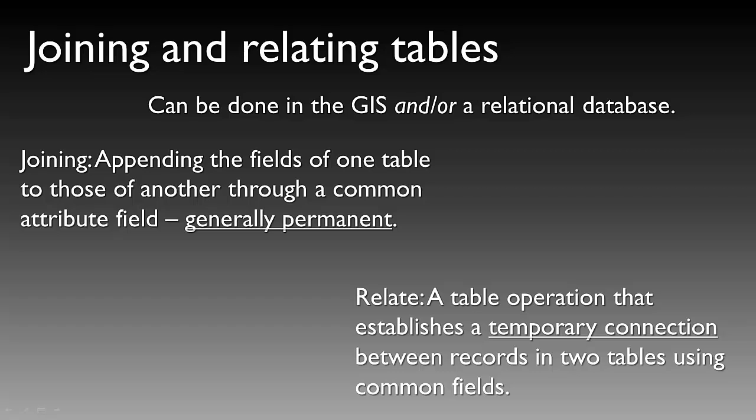Joining is defined as appending the fields of one table to those of another through a common attribute. A join in a GIS is generally considered a permanent action. By permanent, we mean once the two tables are appended together, they cannot be easily separated and become one single table.